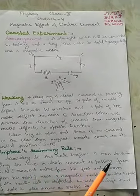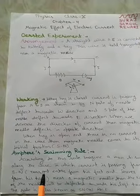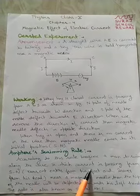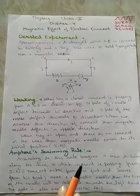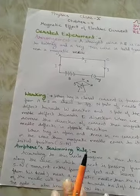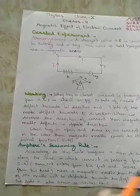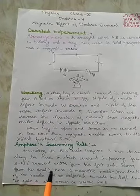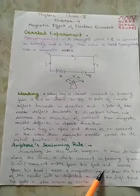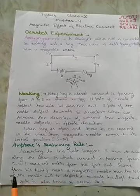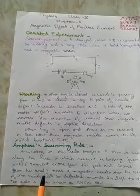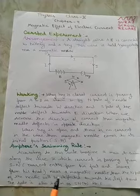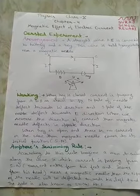According to this rule, we imagine a man who is swimming in a swimming pool in the direction of south to north. The current enters from his feet at the south and leaves from his head at the north.